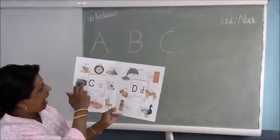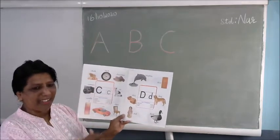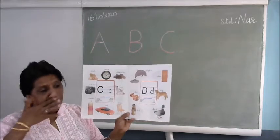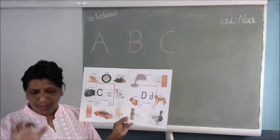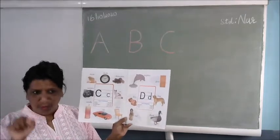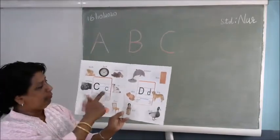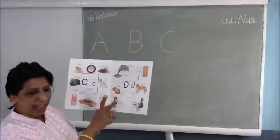And this is C for camera. See when you dress up nicely your mummy takes photo of you. Yeah, she takes a picture of you. So that is from mobile. So that is called C for camera.